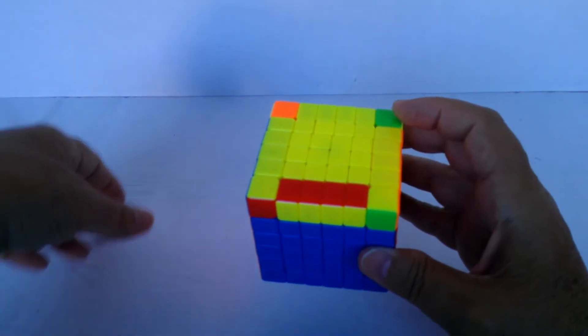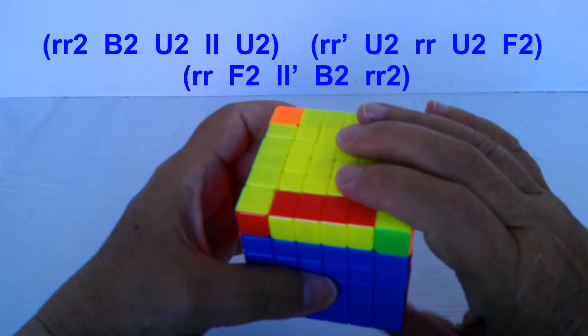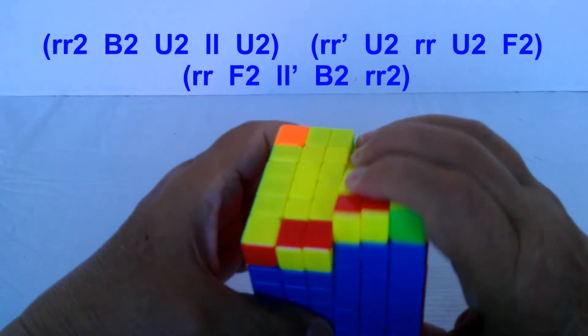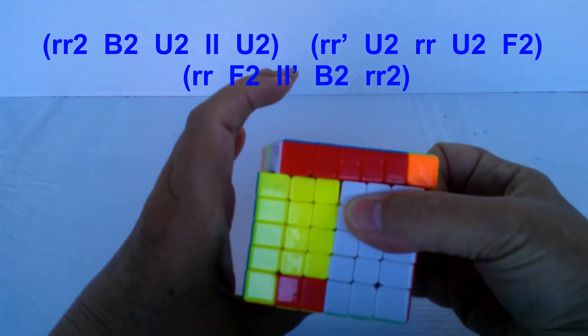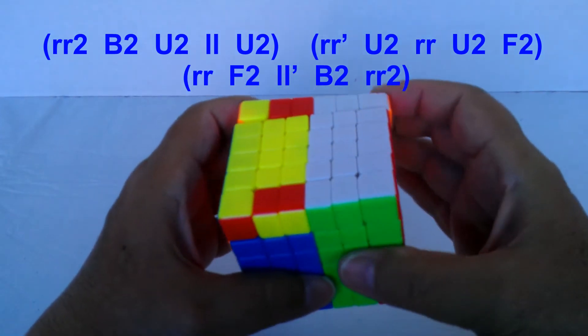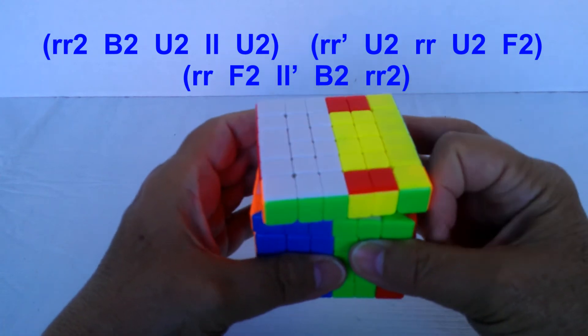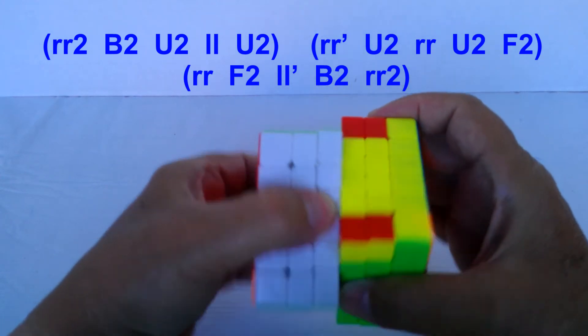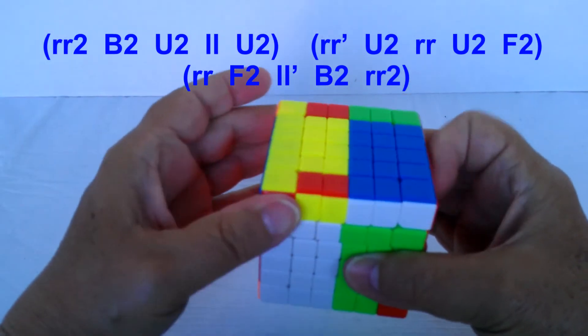So what the moves are in chunks of five are this: an R wide 2, B2, U2, straighten it up, an L wide, and a U2. That's the first five.